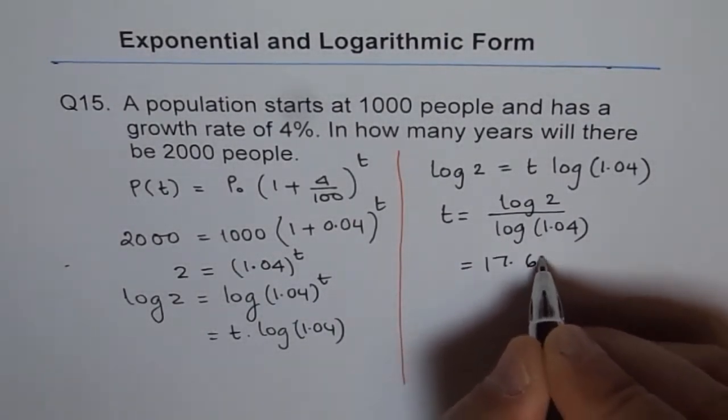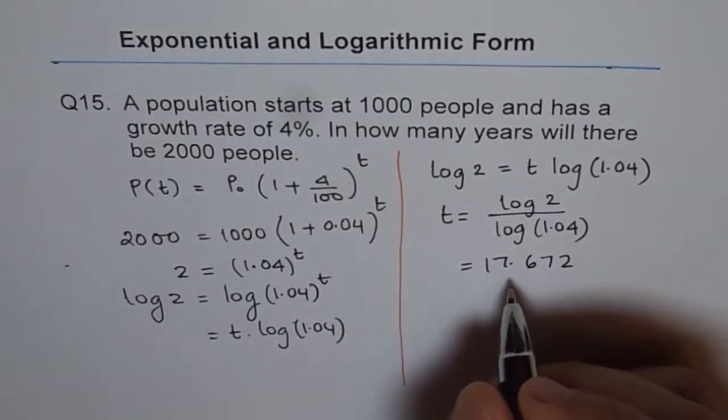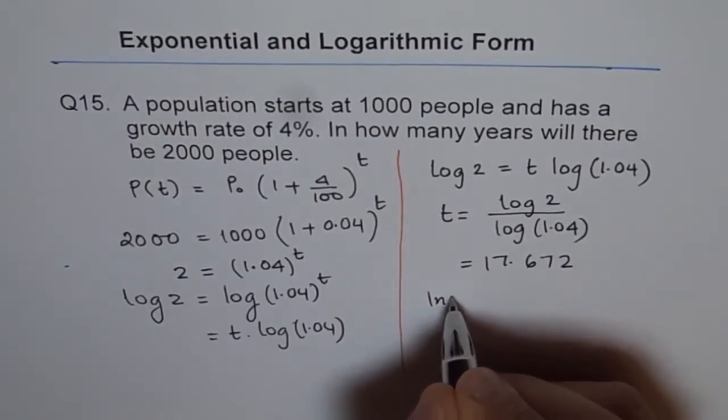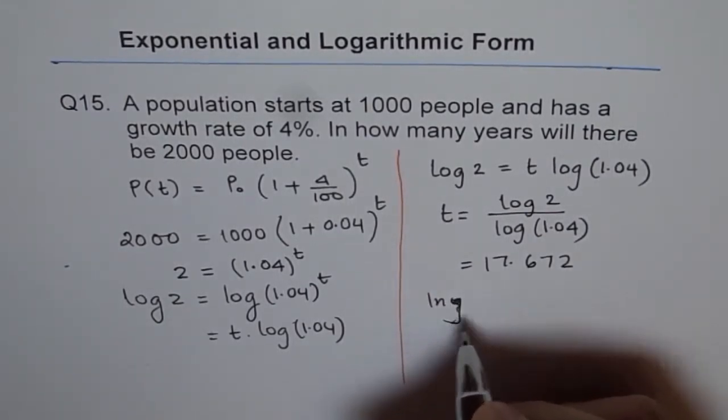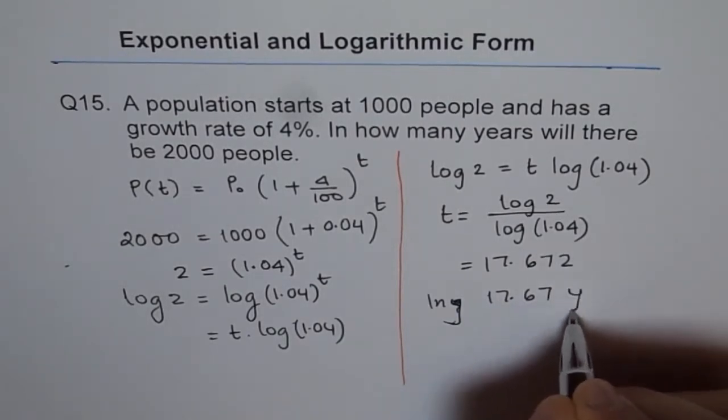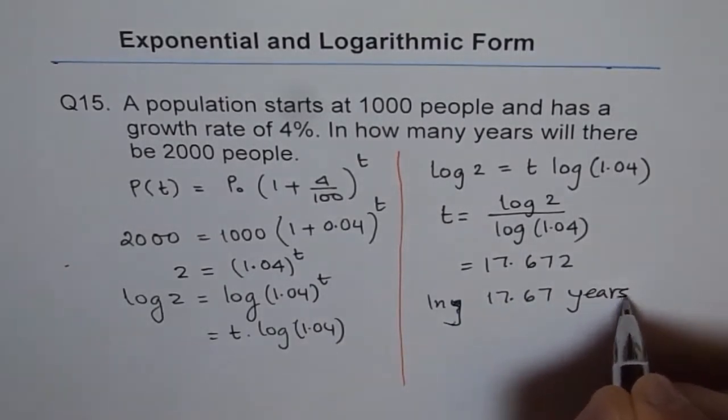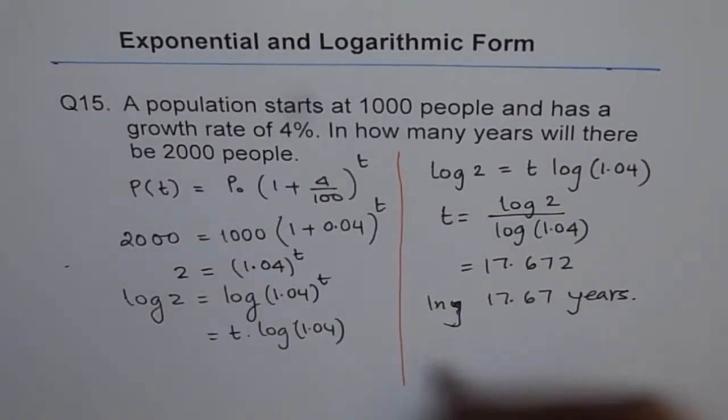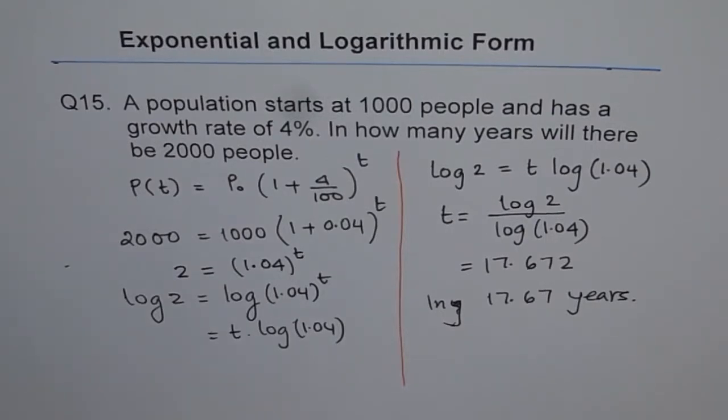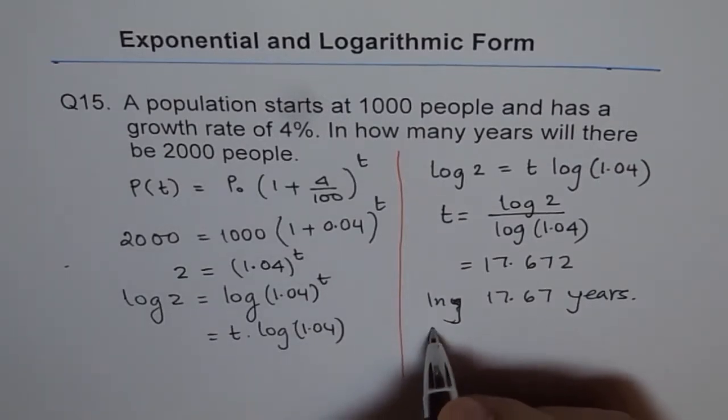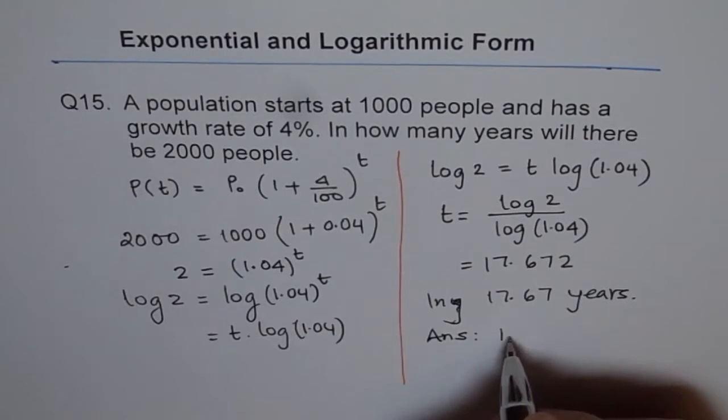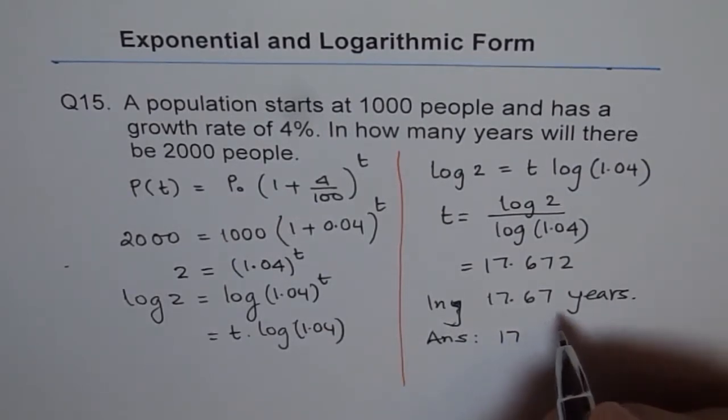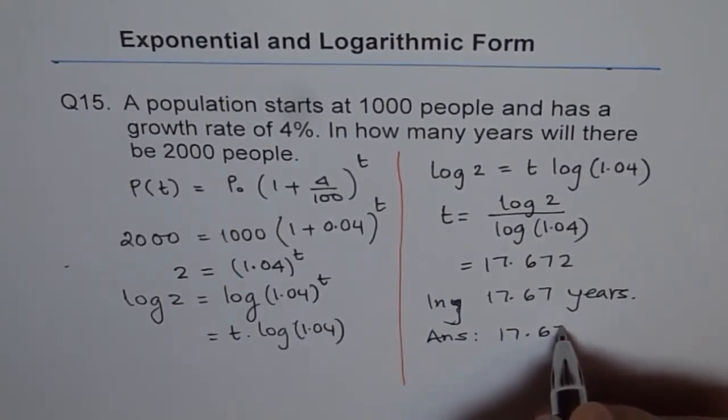17.672. So we can say in 17.67 years, the population will be 2000. Slightly less than 18 years, it will be 2000 people. That is our answer. Answer is 17.67 years.